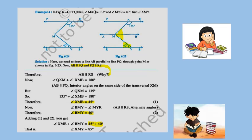Now, angle BMY equals angle MYR. These are alternate angles — see the Z-figure they are making. When lines are parallel, alternate angles are equal. Therefore angle BMY is also equal to 40 degrees.